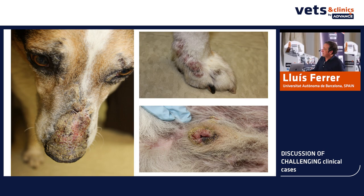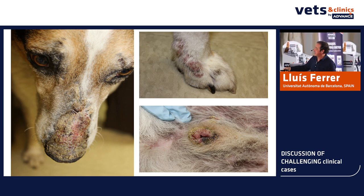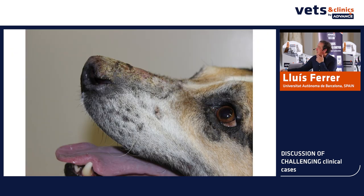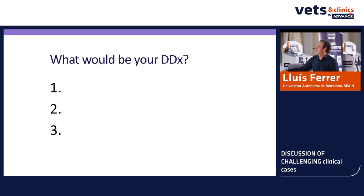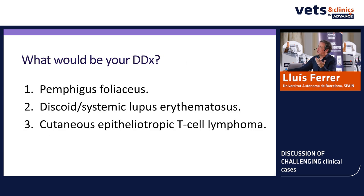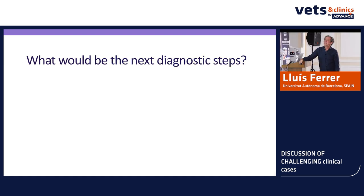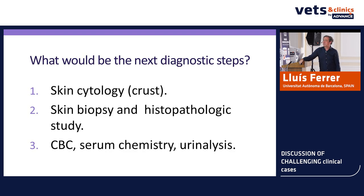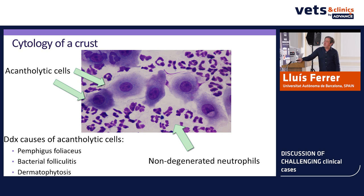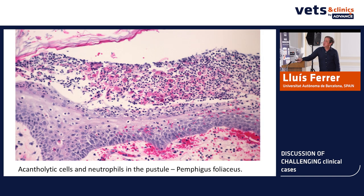You can see crusting around the eyes, nose, and on the legs — also crusted and hyperpigmented. The differential diagnosis is pretty straightforward: number one is pemphigus foliaceus, could be lupus, could be epitheliotropic lymphoma — the dog is seven years old, average age of presentation is ten but you see cases from six. This is an American dog so we don't include leishmaniasis. The classic cytology of pemphigus foliaceus shows acantholytic cells and non-degenerated neutrophils, and the biopsy shows a beautiful subcorneal pustule.